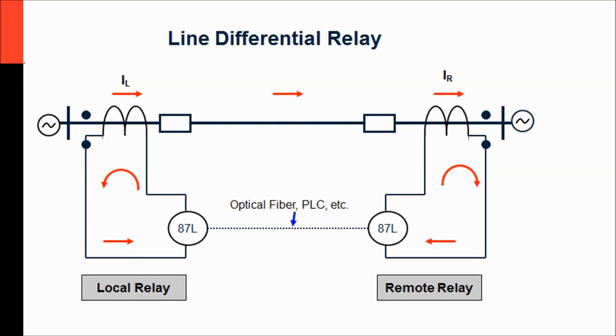We have a line, we have a couple of relays, one on each end of the line, which have to act together to protect the line in a differential scheme. For that, they need to talk to each other and they need to see the magnitudes on both ends of the line in order to determine whether the fault is inside of the line or outside of the protection zone.